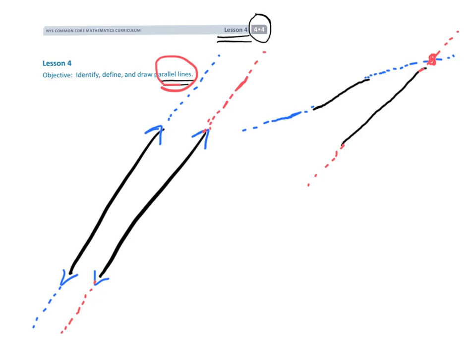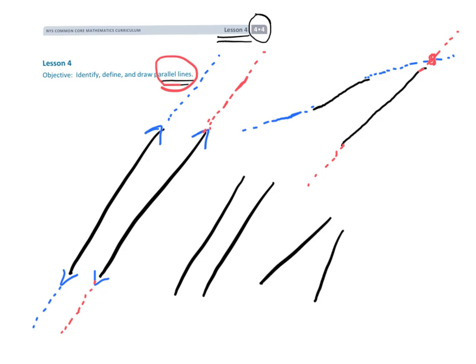Parallel lines not only don't intersect, but they would never intersect no matter how long we extend the lines. So: parallel, not parallel.